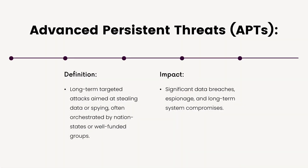7. Advanced Persistent Threats (APTs). Definition: Long-term targeted attacks aimed at stealing data or spying, often orchestrated by nation-states or well-funded groups. Impact: Significant data breaches, espionage, and long-term system compromises.